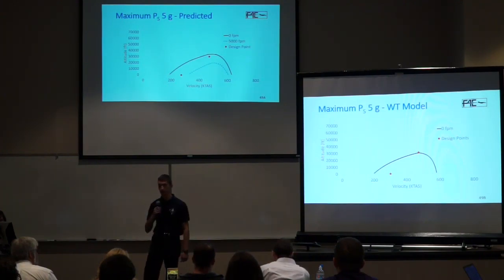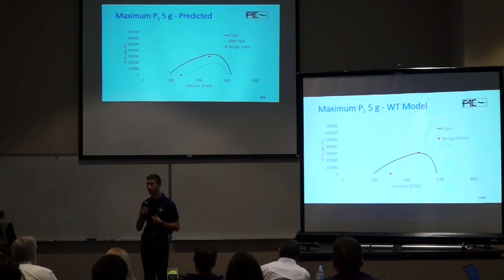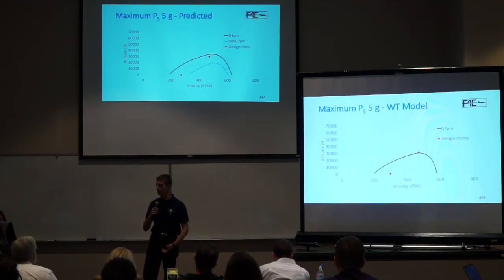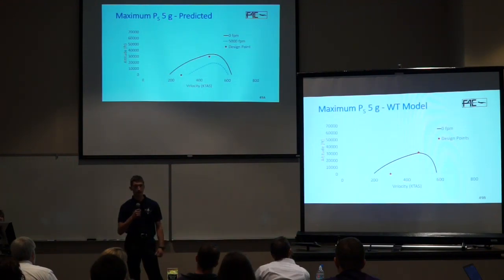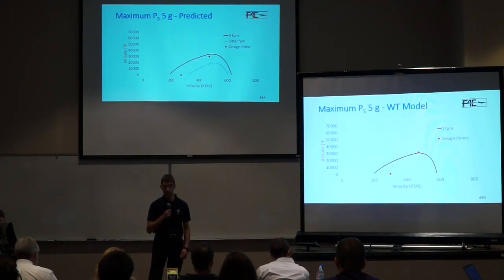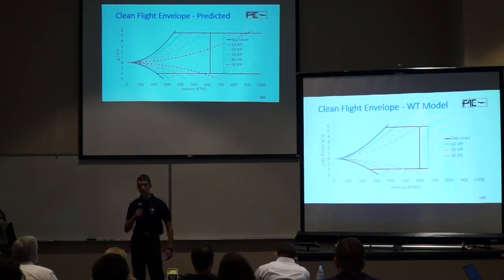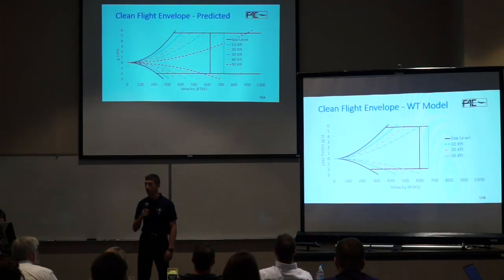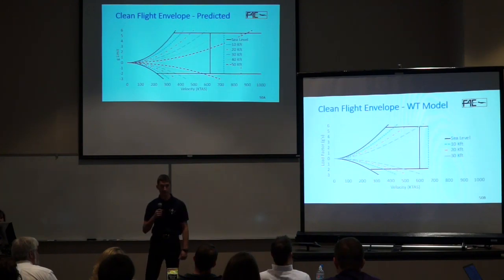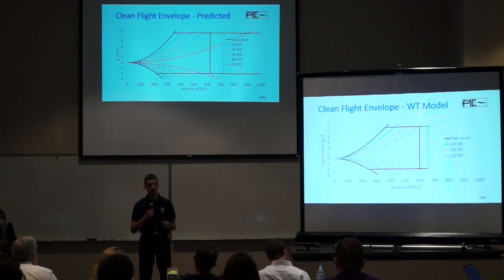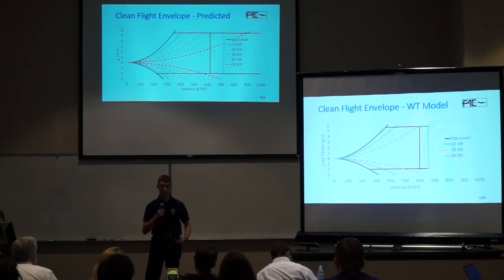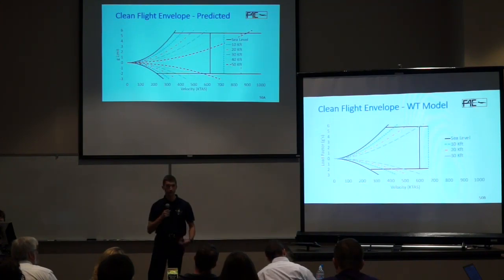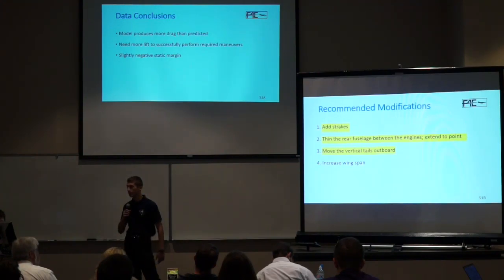For our 5G maneuvers with afterburner selected, the two design points relate to our RFP requirements: sustaining 5Gs at sea level, and the 5G break turn at 30,000 feet. We initially predicted we could sustain both maneuvers. With our increase in drag, the wind tunnel model shows we can still sustain our 5G maneuver at sea level, but we can only sustain 5Gs up to 29,500 feet — just short of the 30,000-foot requirement. For the flight envelope, the corner velocity on the wind tunnel model is higher than predicted due to increased drag, requiring faster velocities to maintain corner velocity.